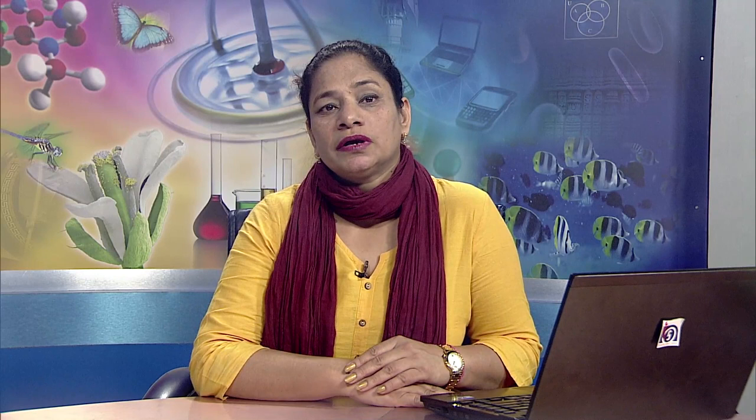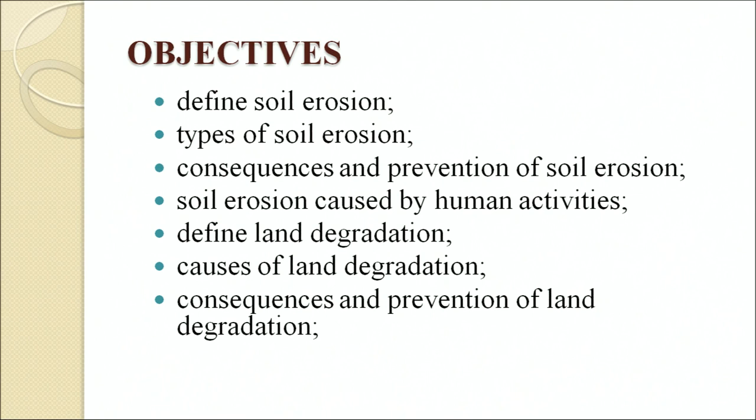We will also discuss various methods of conservation of soil along with control of land degradation. This is lesson 17, conservation of soil and land, from module 5, environmental conservation of your course. I am Nillam Gupta, your course coordinator. The objectives of this program are: define soil erosion, types of soil erosion, consequences and prevention of soil erosion, soil erosion caused by human activities, define land degradation, causes of land degradation, and consequences and prevention of land degradation.